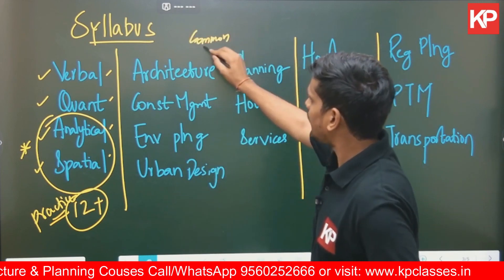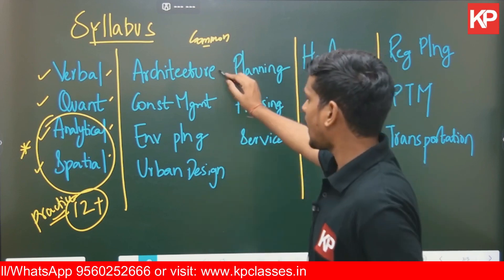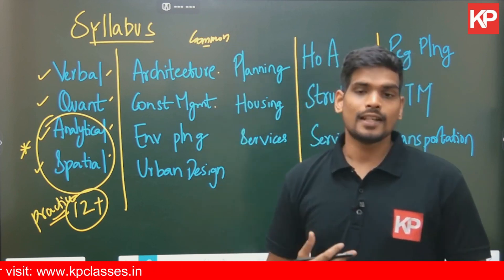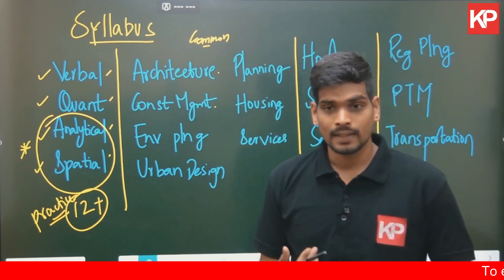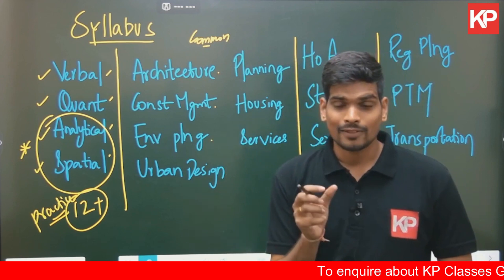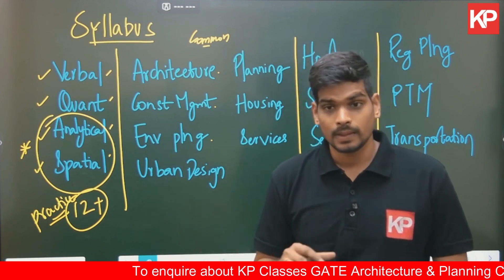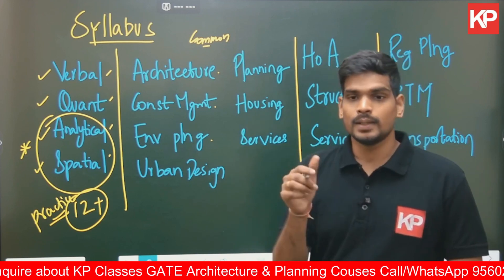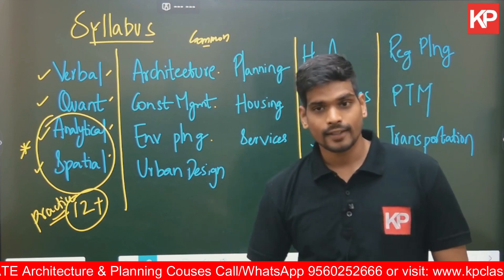Moving to the second part — the common part — it is very crucial because it carries the maximum weightage of 60 marks. In the official syllabus, there are seven sections. Section one is architecture design, covering basics of architecture and related standards. Section two is construction management and estimation, including critical path method, PERT, and estimation concepts. Section three is environmental planning, covering environmental impact assessment, ecosystems, environmental pollution, sustainability, and sustainable development goals.